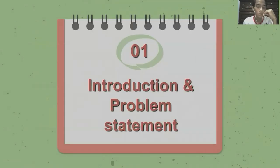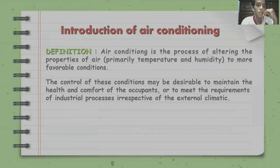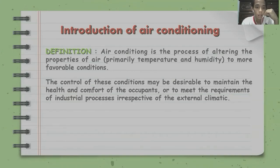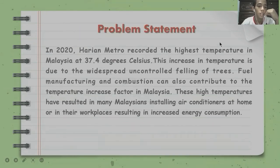First is our introduction and problem statement. The definition is: air conditioning is the process of altering the properties of air to more favorable conditions. The control of this condition may be desirable to maintain the health and comfort of the occupants or to meet the requirements of industrial processes, irrespective of the external climate.